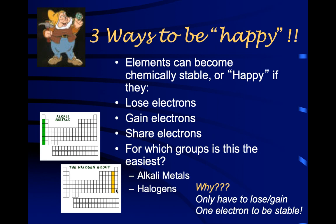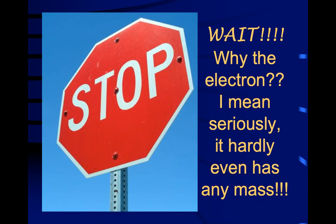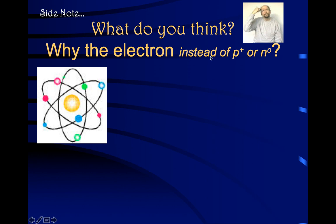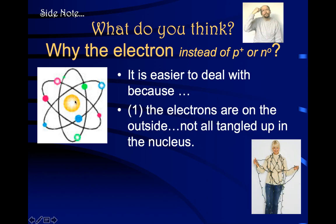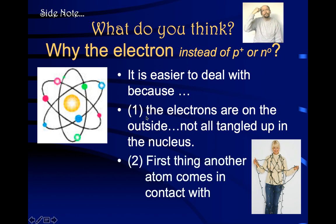So those are the two most reactive groups on the periodic table. You might wonder: electrons are tiny with barely any mass — why are they so important? Electrons are easier to deal with because they're not tangled up in the nucleus. Also, they're the first thing that comes into contact with another element — they're the front lines. When two atoms come into contact, it's the two electron clouds that will interact with each other. That's why electrons guide atoms in creating compounds.